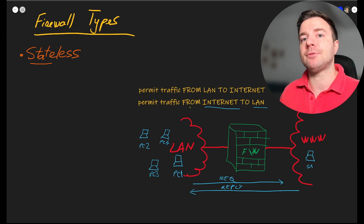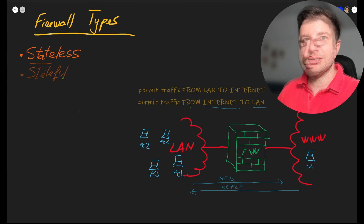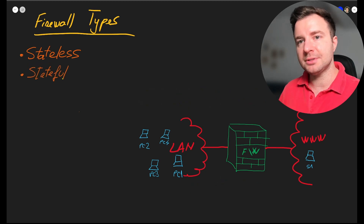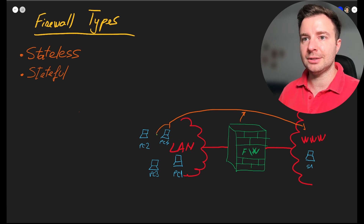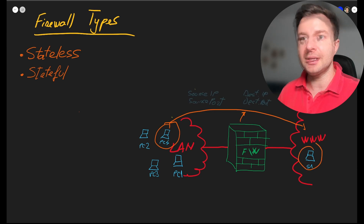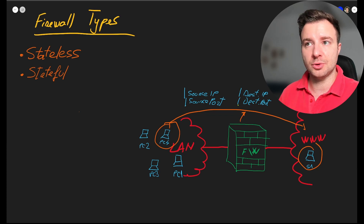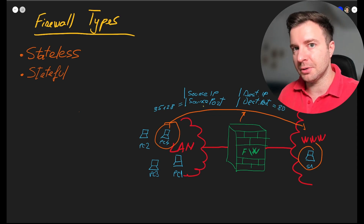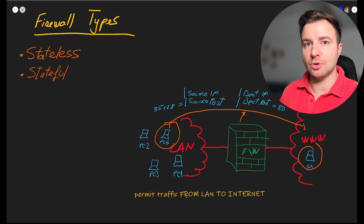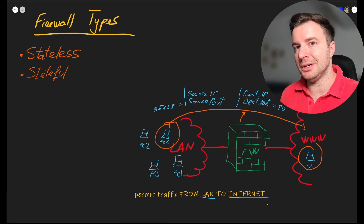This behavior is that of a stateful firewall. It's called stateful because it remembers the state of connections — it tracks connections initiated from inside the LAN. It looks not just at source and destination IP addresses, but also at source and destination port numbers. For example, the source port might be something random like 35128, while the destination might be port 80. The rule we configure simply permits all traffic from the local network to the internet.